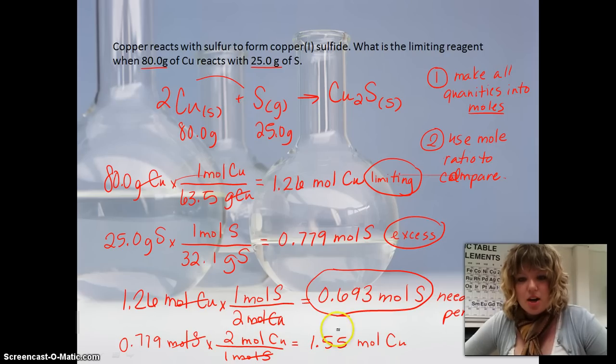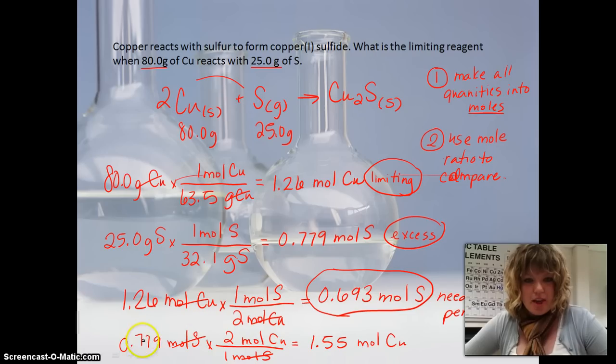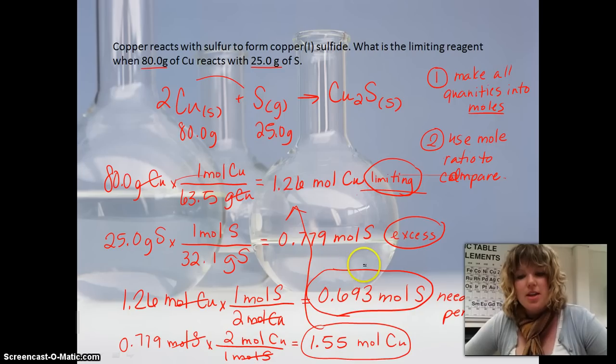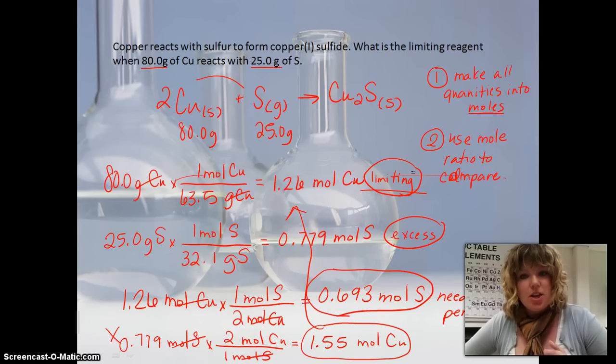And you can see this number is larger than this number. For this, if we have this many, for it to be a perfect reaction, we'd need 1.55 moles of copper, which is significantly less than that. So this just proves again that this is the limiting reactant. So you don't have to do this step. I'm just showing you that you can choose either one of these moles to do the calculation, and you're going to get the same answer.